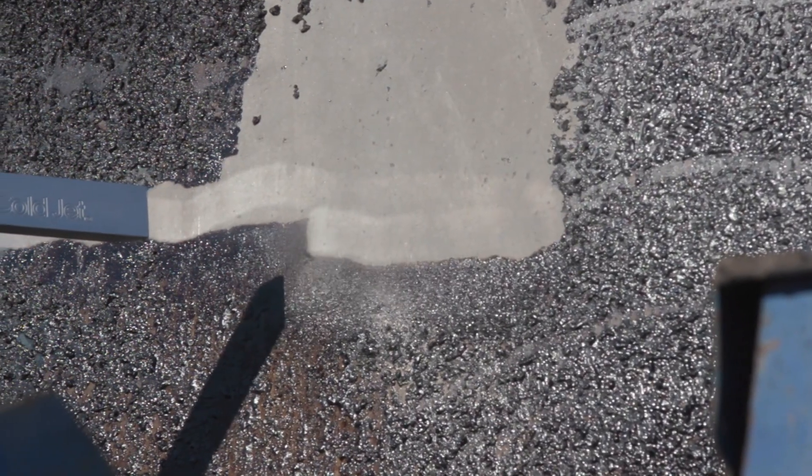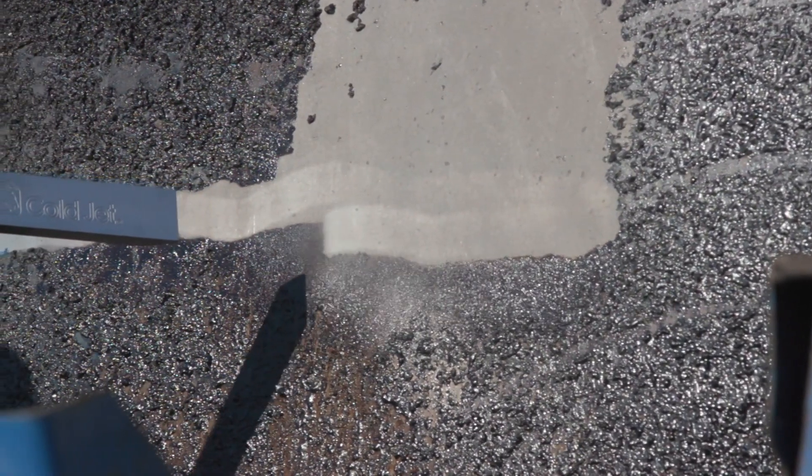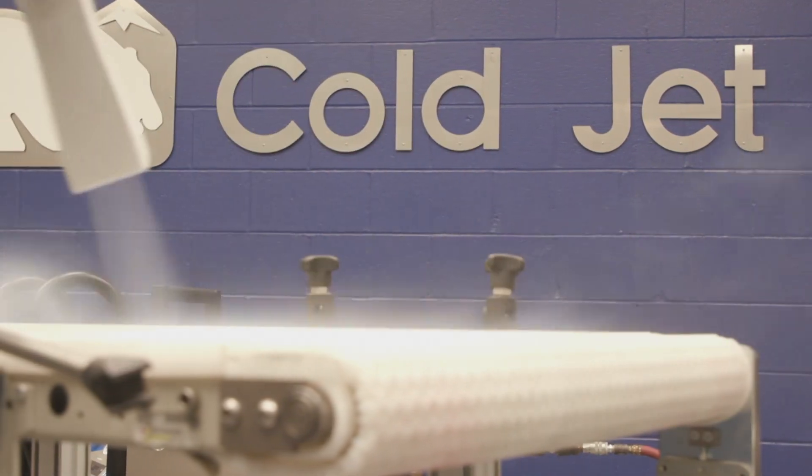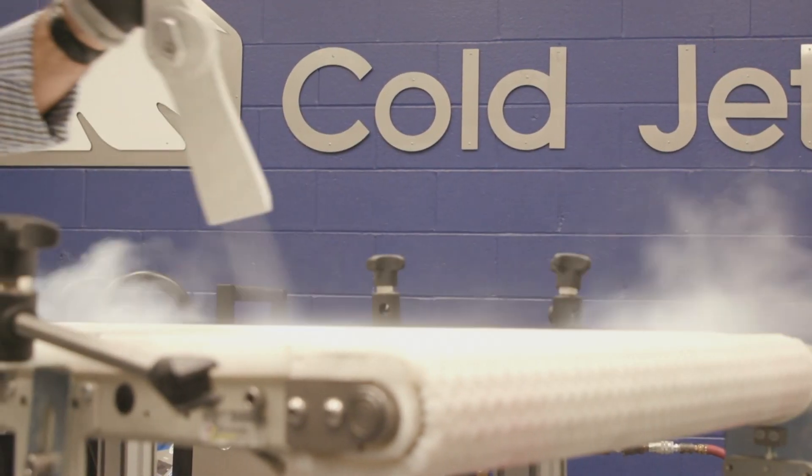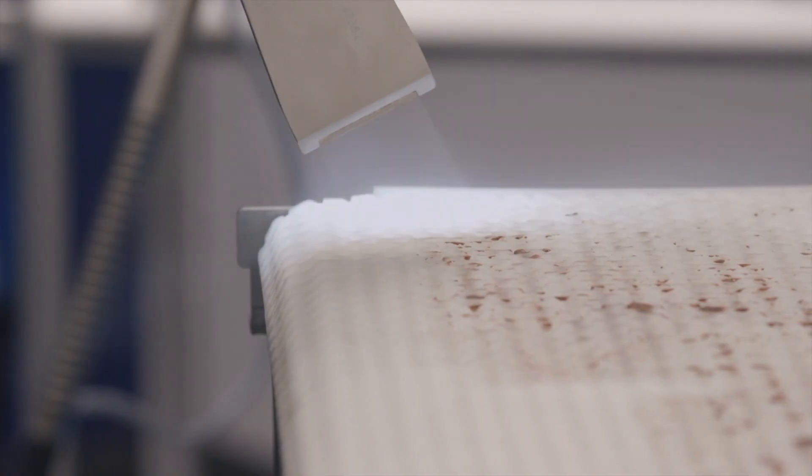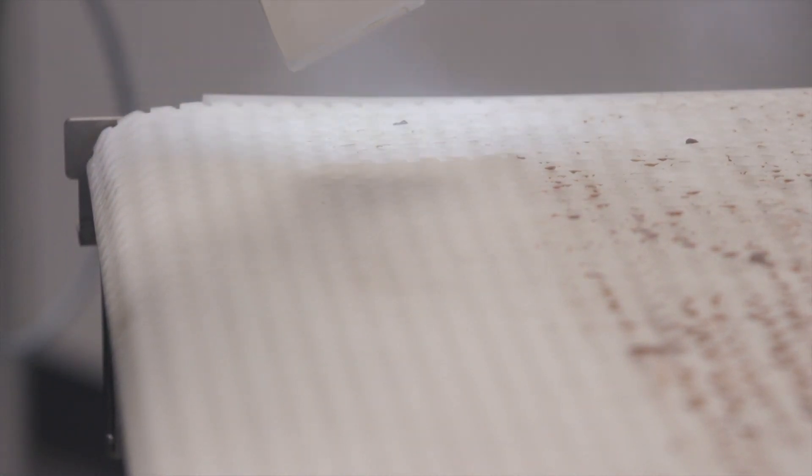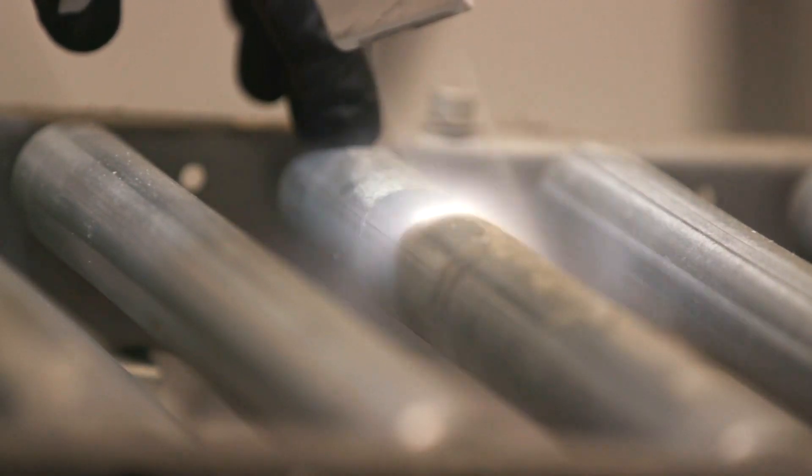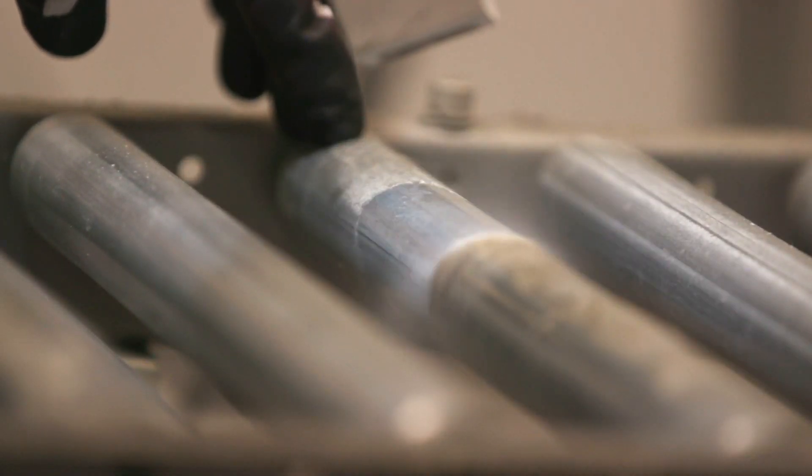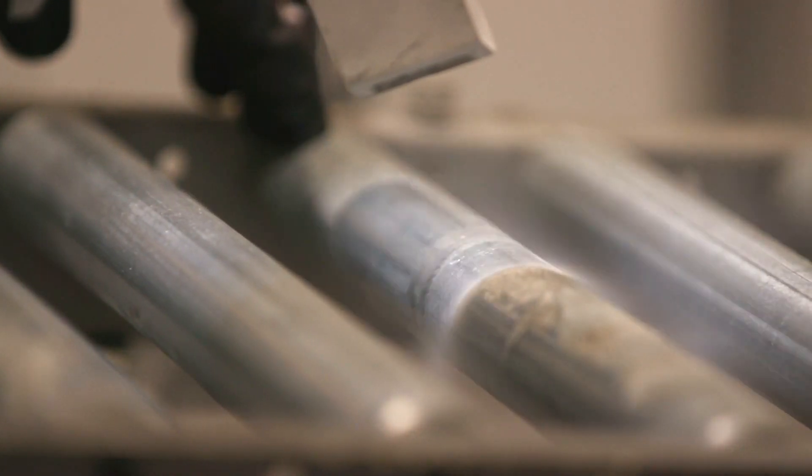Dry ice cleans in three ways. First, you have a solid particle striking the surface, some kinetic impact. Second, it's very cold. It's minus 109 Fahrenheit, about minus 79 Celsius. So it'll actually cool the contaminant faster than the substrate. It'll make the contaminant shrink and disbond. Third, when the particle hits, it sublimates upon impact, means it goes from a solid to a gas. It'll expand about 800 times. So it'll actually flush away the contaminant from the surface.